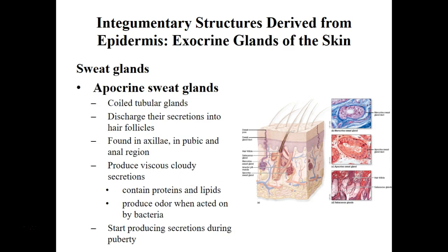Apocrine sweat glands secrete directly to a hair follicle. Their sweat is composed mainly of proteins and fats. This is the sweat associated with both pheromone release and with odors — the odor is released when bacteria break down the fats and proteins.